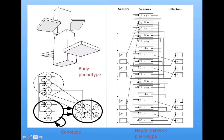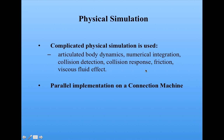Here's a picture from one of Carl Sims' papers showing the whole system with the genotype, which is evolved to produce a phenotype — the body. The neural network is also evolved to produce a phenotype. So the body and the brain are simultaneously evolved inside a physical simulation, which is implemented in parallel on what's called a connection machine — a massively parallel machine.